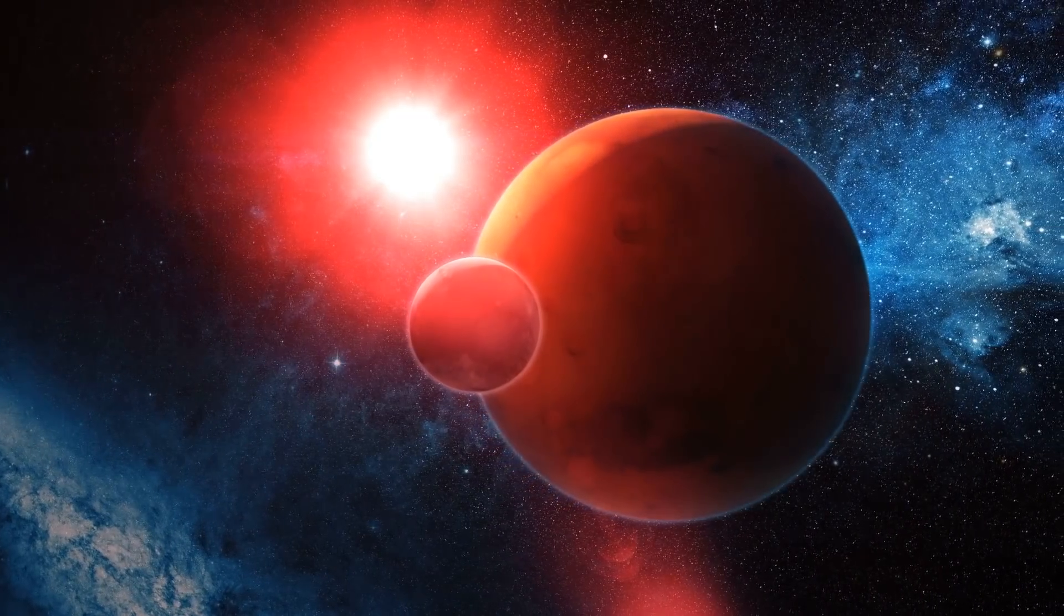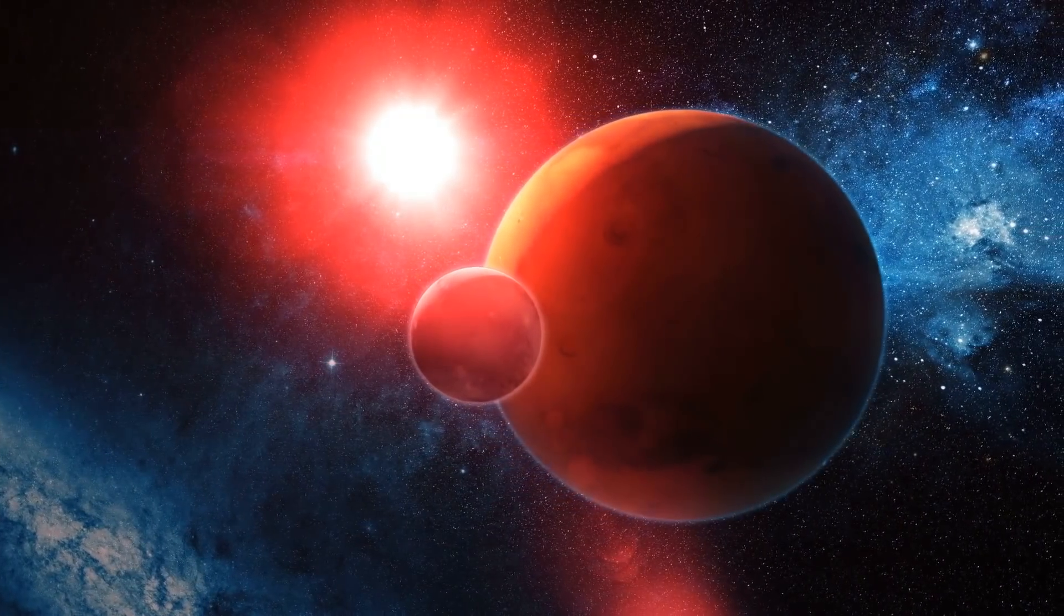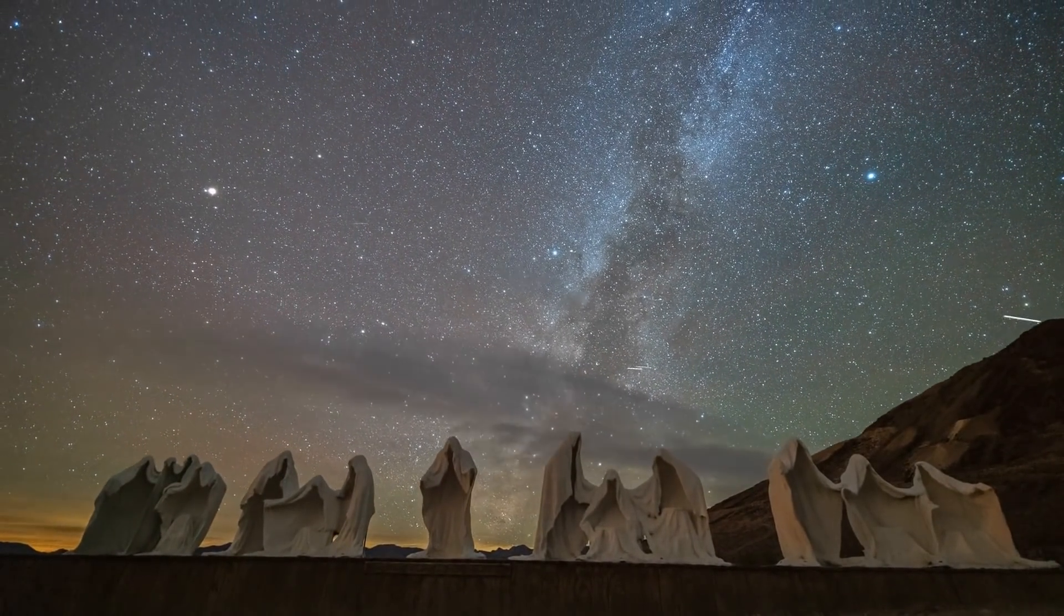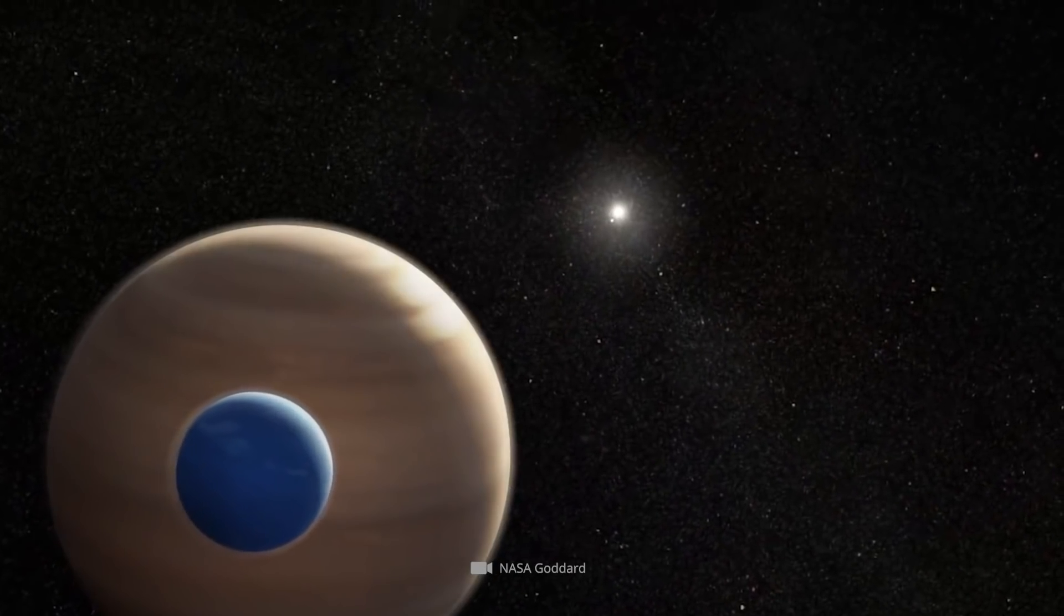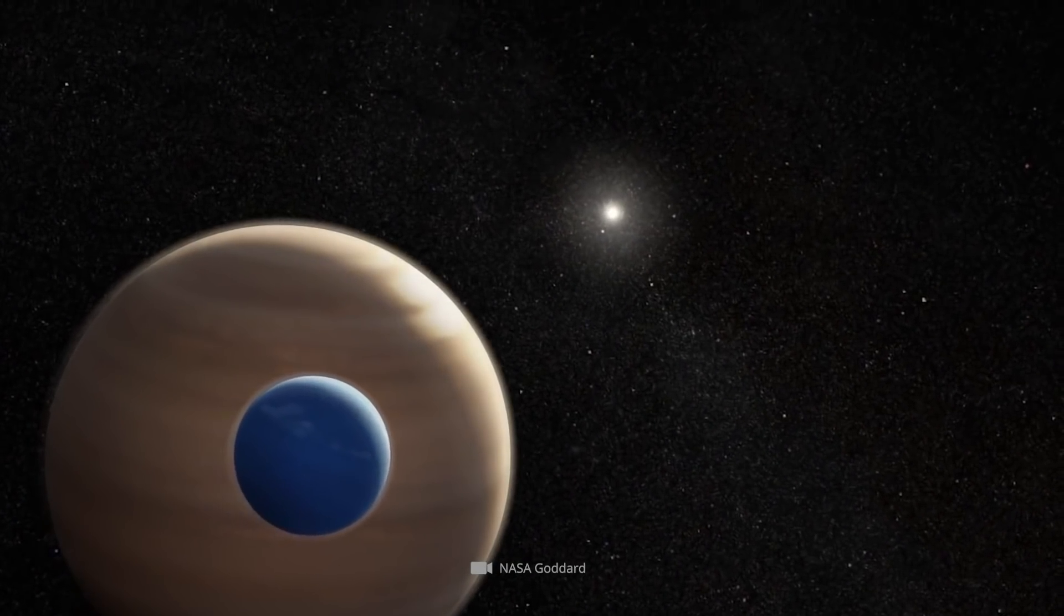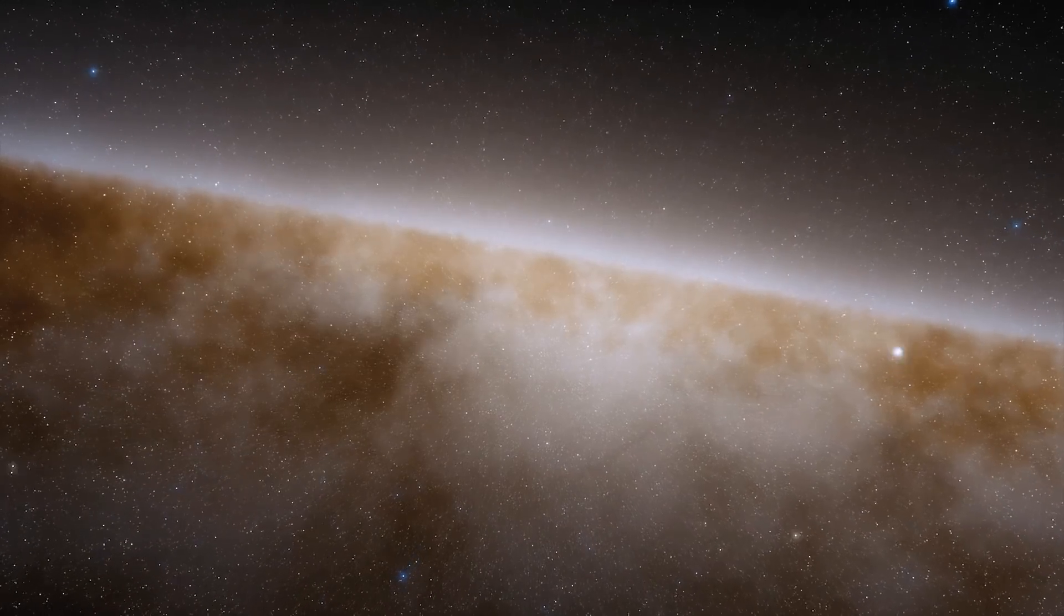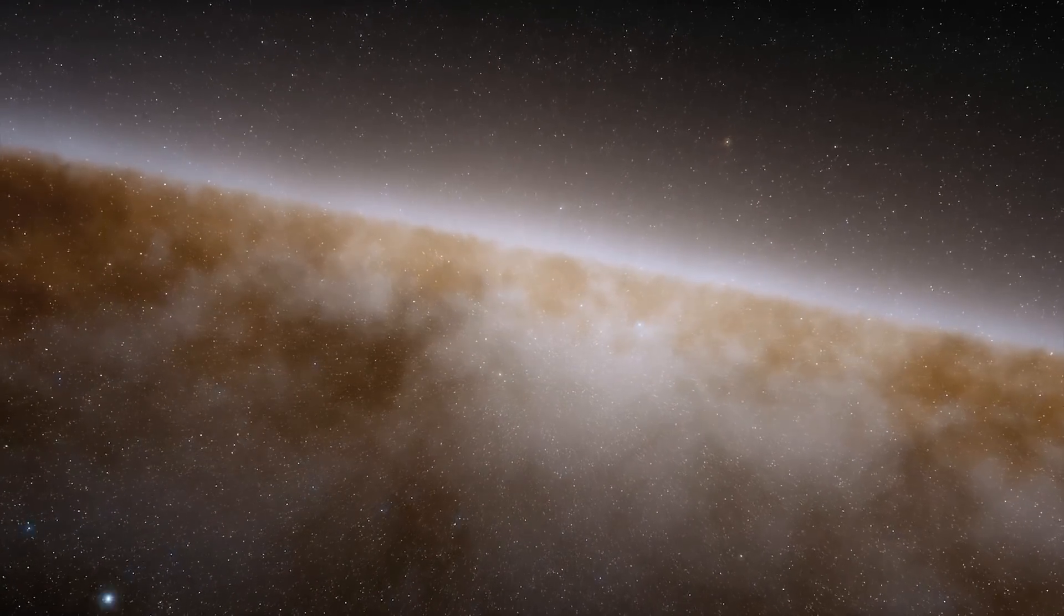Another clue suggesting the existence of this exomoon is the time of the transit. The gas giant began transit scarcely 80 minutes earlier than the researchers had predicted due to its orbit. In fact, such deviations may be due to the gravity of a satellite.